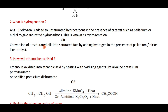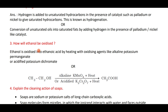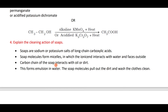Hydrogenation is the addition of hydrogen to unsaturated hydrocarbons in the presence of a catalyst such as nickel or palladium — converting unsaturated carbon compounds to saturated ones. Ethanol is oxidized to ethanoic acid by heating with oxidizing agents such as alkaline potassium permanganate or acidic potassium dichromate: CH₃CH₂OH gives CH₃COOH.